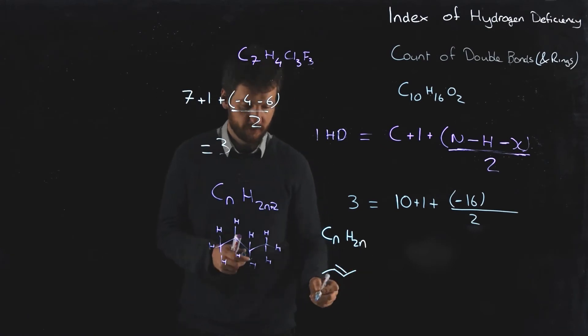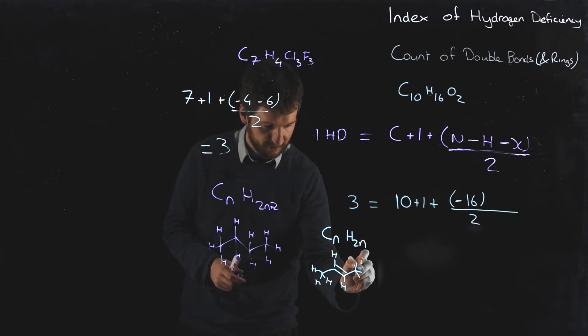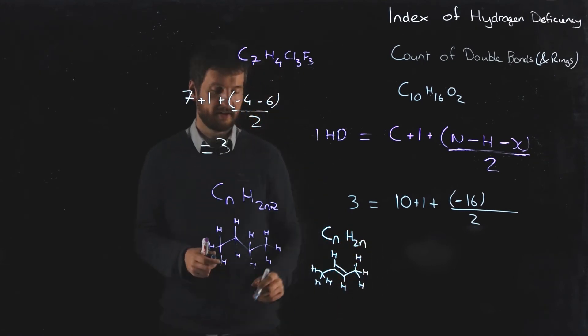And we could draw that out as trans-2-butene if we wanted, or whatever it happens to be. But we can see that all we've done to go from here to here, to add in a double bond, is going to be to take away two hydrogens.